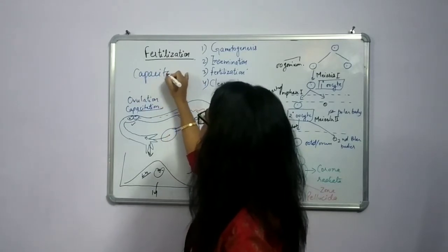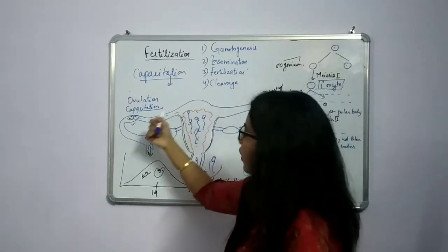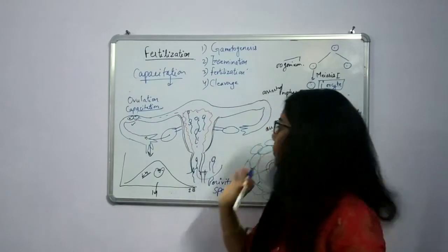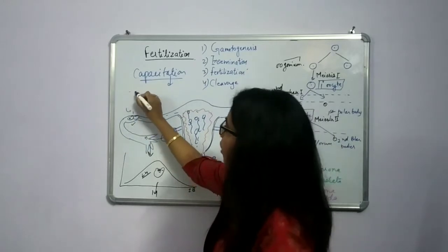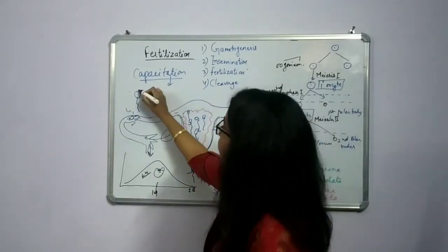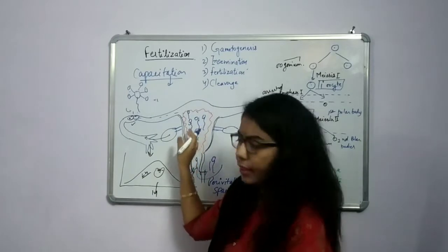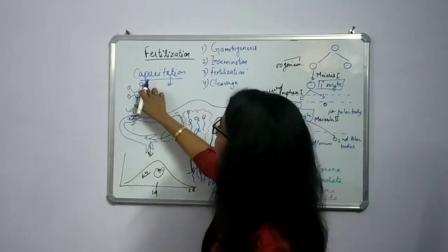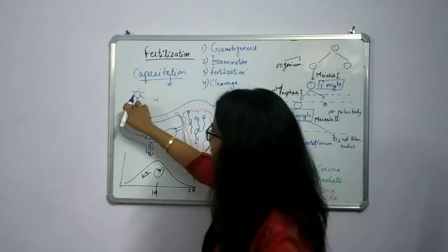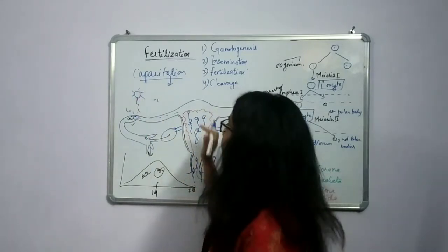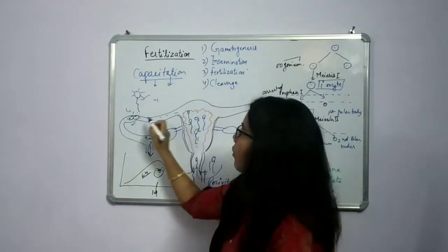What is capacitation? It is the secondary maturation of the sperm so that it can fertilize the ovum properly. During capacitation, the sperm has some structures on it. When it enters the female genital tract, these structures are removed by the secretion of vaginal fluid. This process is called capacitation, and after it the sperm has greater capacity to fertilize with an ovum.